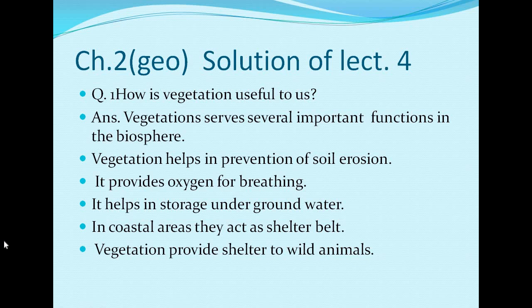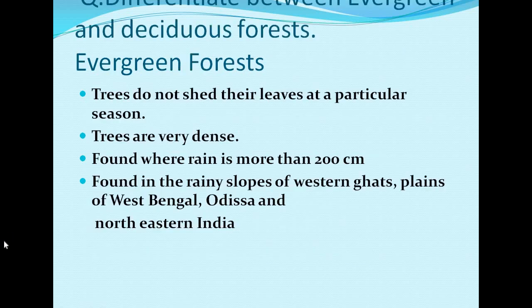Now we will discuss question solutions for Chapter 2, Lecture 4, Geography. The first question is: how is vegetation useful to us? Vegetation serves several important functions in the biosphere. Vegetation helps in prevention of soil erosion, provides oxygen for breathing, helps in storage of underground water, and in coastal areas trees act as shelter belts — planted in rows to check the movement of fast winds. Vegetation also provides shelter to wild animals.